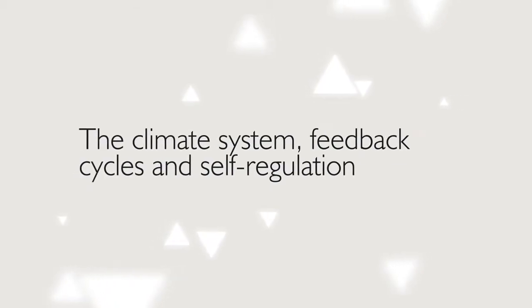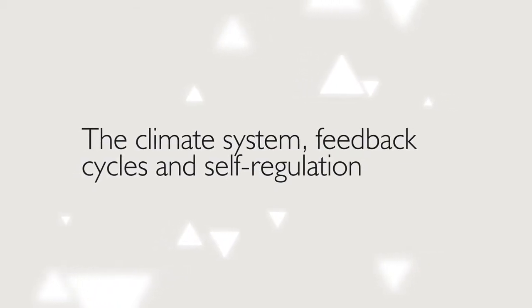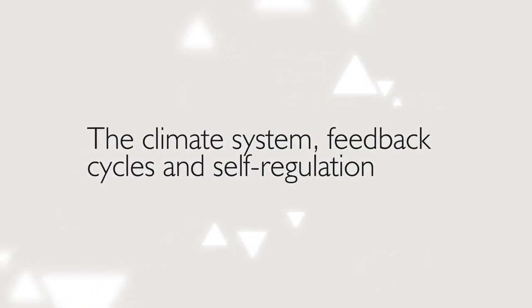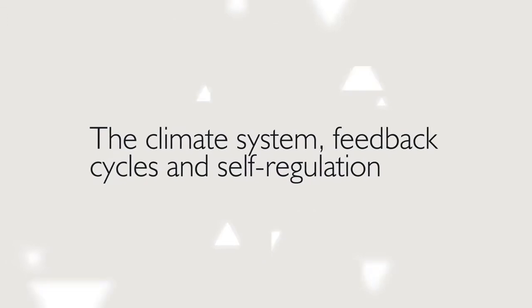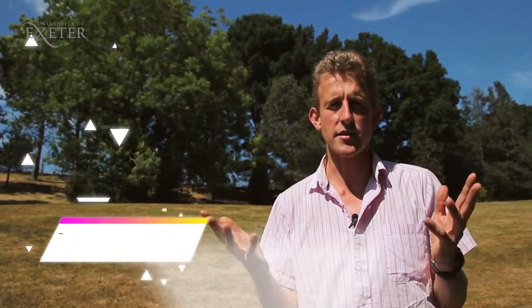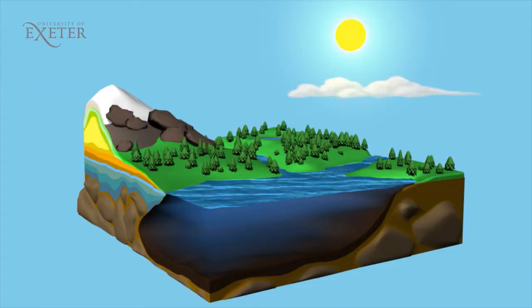What is the system of climate change? Fundamental to understanding why our climate changes is understanding that we can conceptualise the climate as a system. It is a system that encompasses five key components.